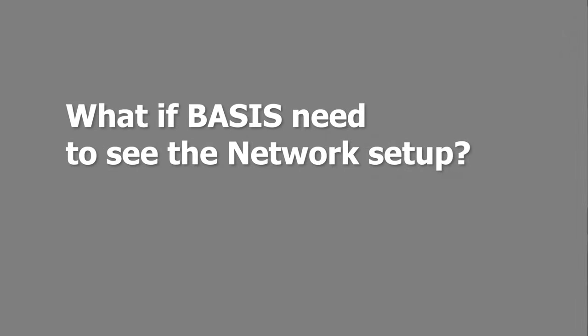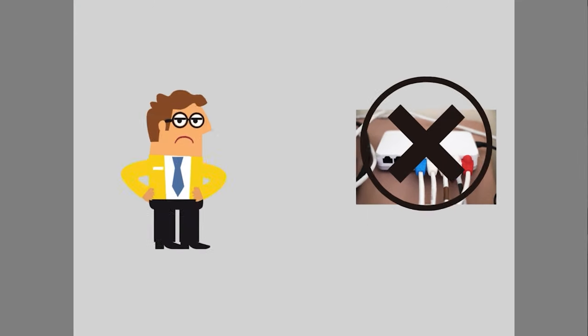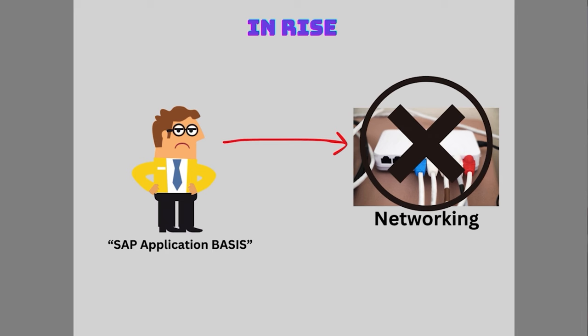What if Basis administrators need to see the network setup? Under a RISE with SAP subscription, our typical Basis administrator does not get access to the server networking — no cloud visibility, no VLANs, no diagrams, no SAP router, no VPNs, no Wireshark, no NEPCAT, no SSH tunnels, no X11. None of it.